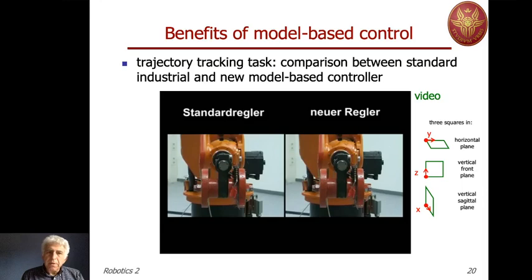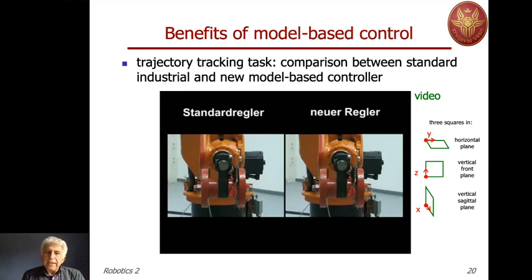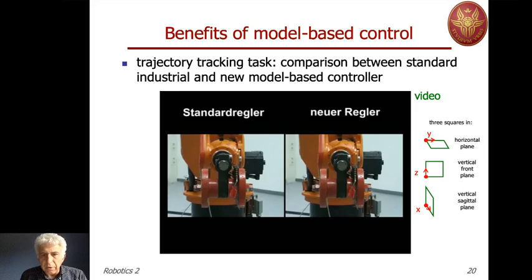In the following example we see a number of uses of these more advanced techniques. The first example is an industrial case in which, on the same KUKA robot seen before, we compare the performance in terms of tracking a trajectory defined in the Cartesian space. On the left you see the performance with a standard controller, and on the right the performance with a model-based computed torque method, which uses information on the dynamic model to generate the actual torque command.